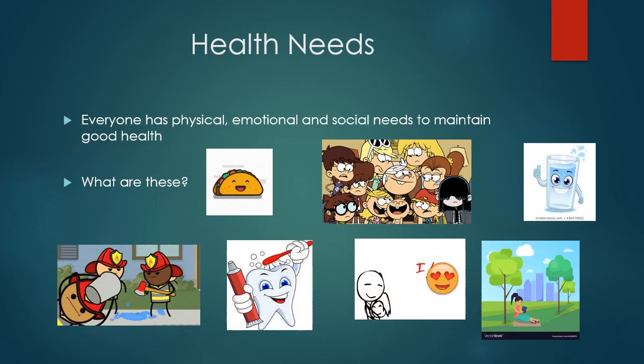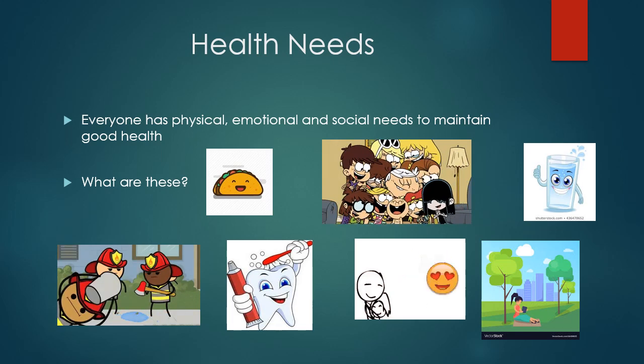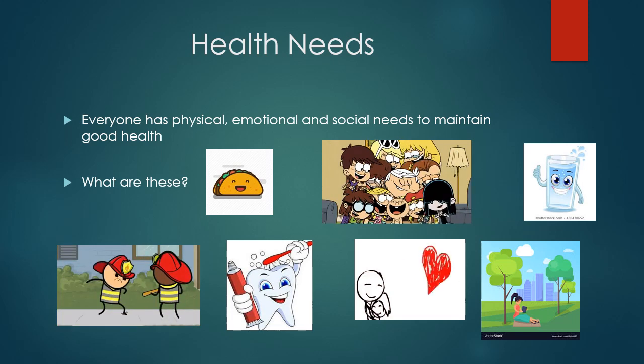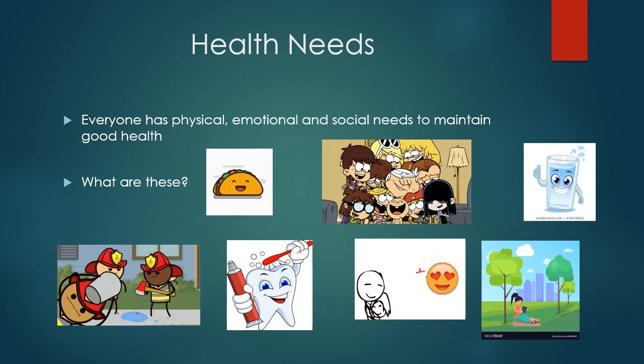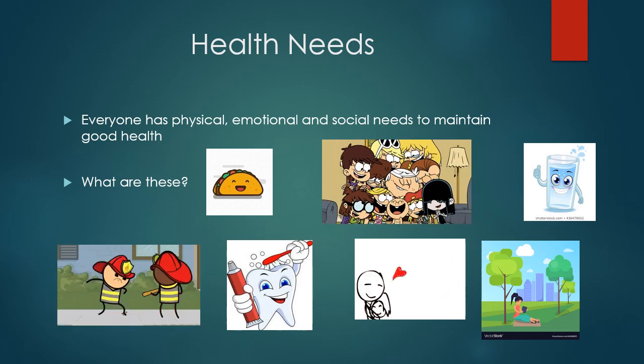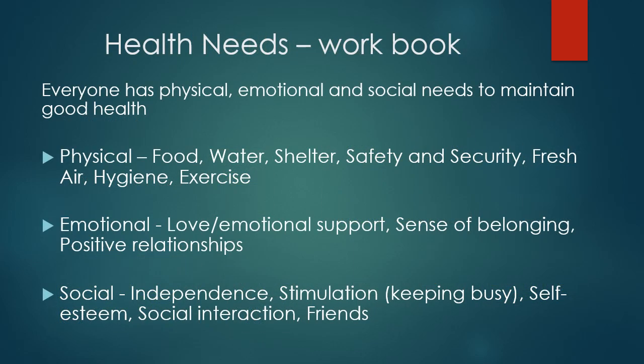Here's another slide on health needs with some pictures to recap that everyone has physical, emotional and social needs to maintain good health. Now you're going to look at the workbook — chapter one, the health needs workbook — and we're going to look at question number one: outlining two of your own physical, emotional and social health needs. Everyone has physical, emotional and social needs to maintain good health.